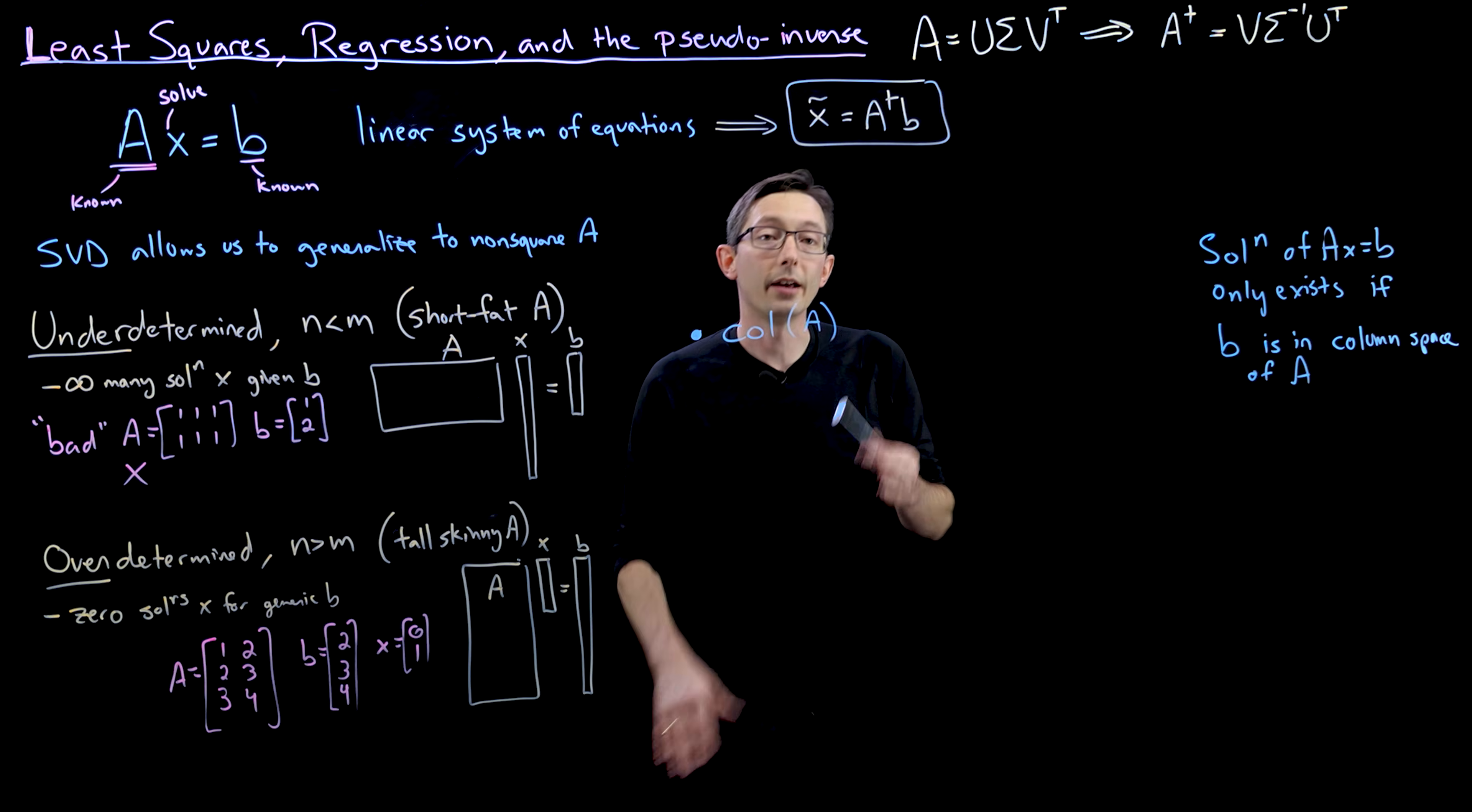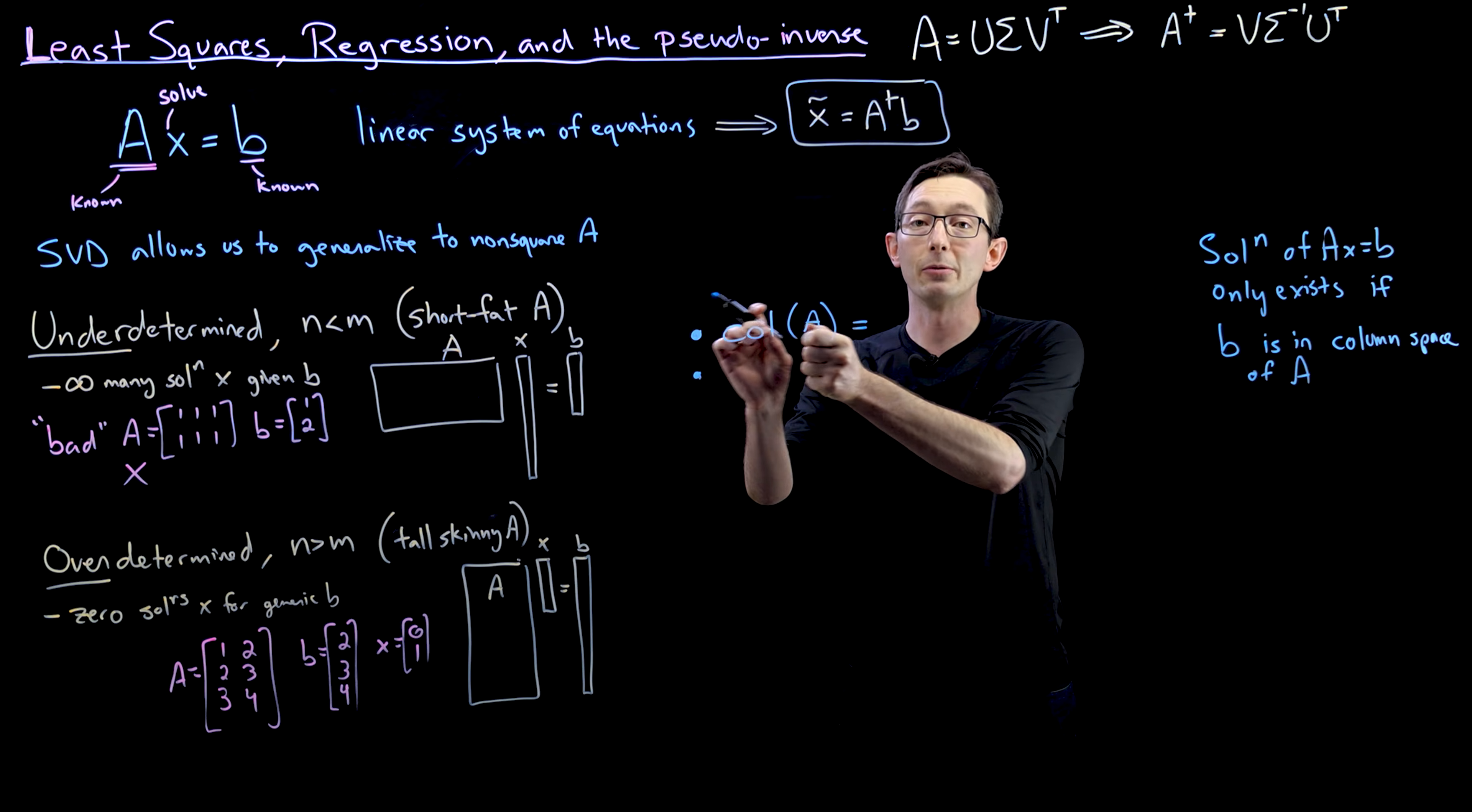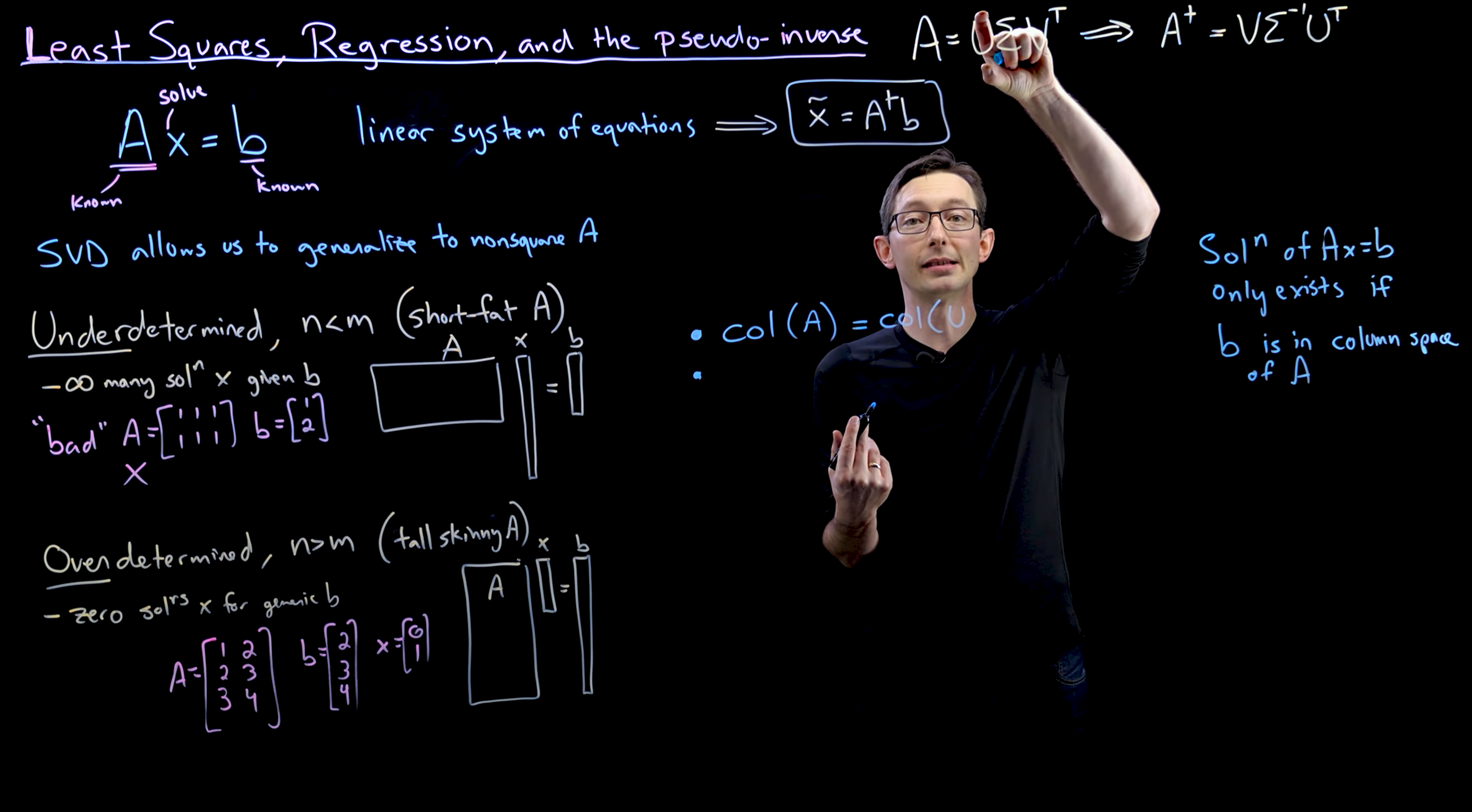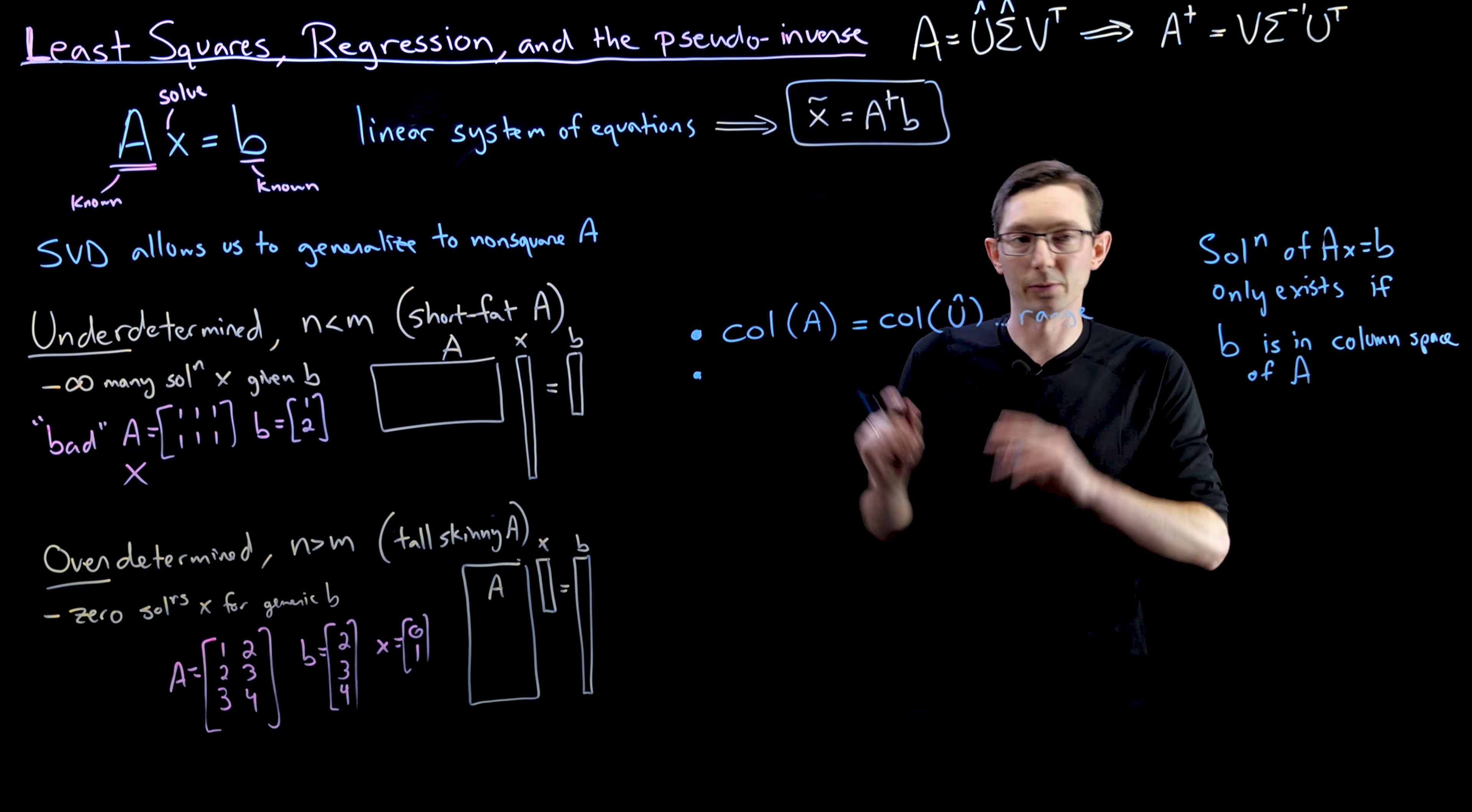Now, there are three other subspaces that are important. There's what I'm going to call the orthogonal complement. So this column of A, sorry, let me go back. Column of A, this set of all vectors that can be written as a linear combination of the columns of A, is also equal to the column space of U. By construction, I constructed the singular value decomposition. This is the economy SVD. Specifically so that this column space of U hat is equal to the column space of A. That's called the range.